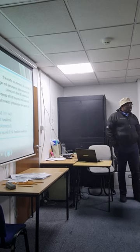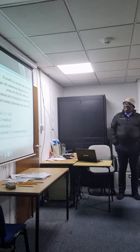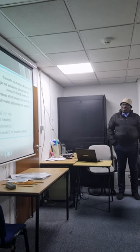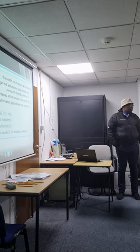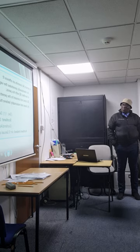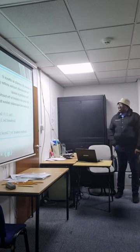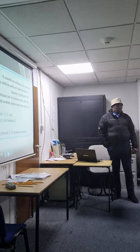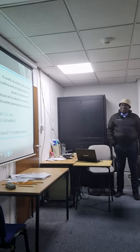Rape: a person commits an offense if he intentionally penetrates the vagina, anus, or mouth of another person with his penis, and B does not consent to the penetration, and A does not reasonably believe that B consents. Sexual assault: a person commits an offense if he intentionally touches another person, the touching is sexual, B does not consent to the touching, and A does not reasonably believe that B consents.